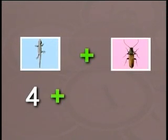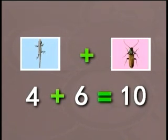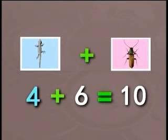And the beetle has one, two, three, four, five, and six. Six legs. How many legs do they have all together? The sum of four and six is ten. Yes! Ten legs. Let's write this in a number sentence. The sum of four and six is ten.